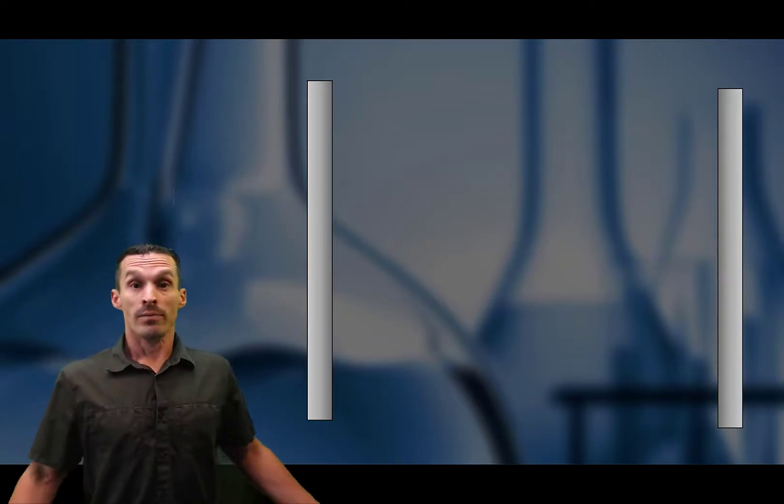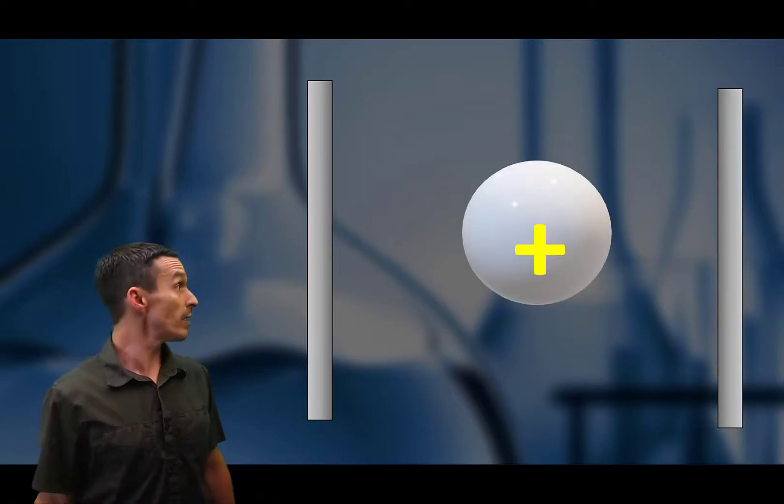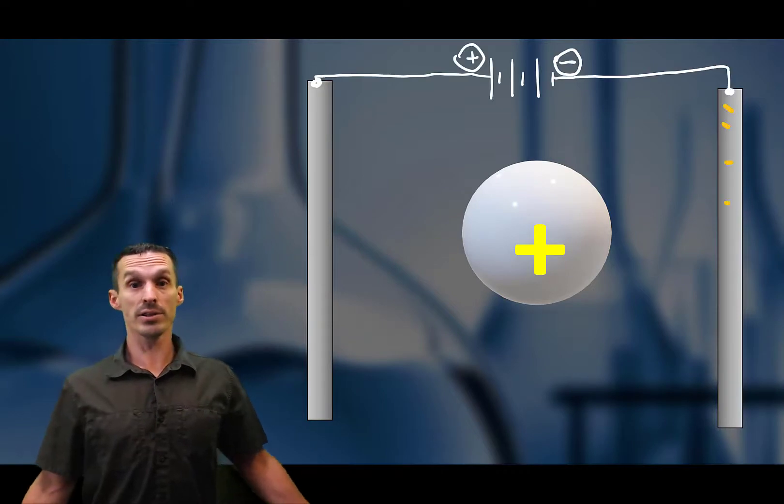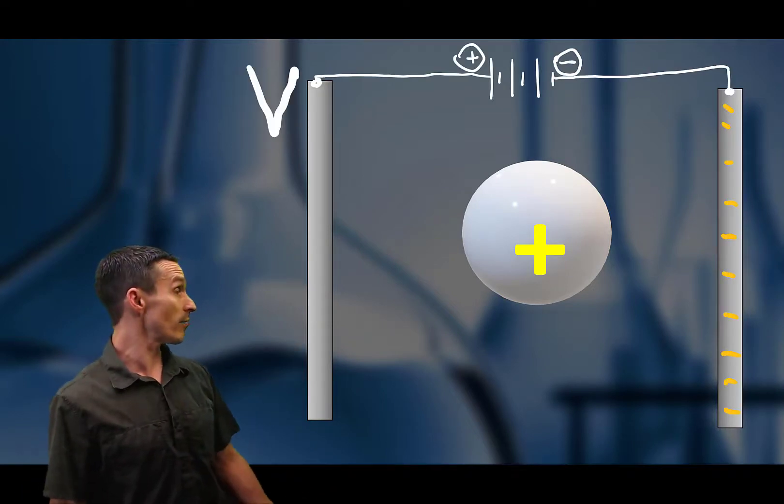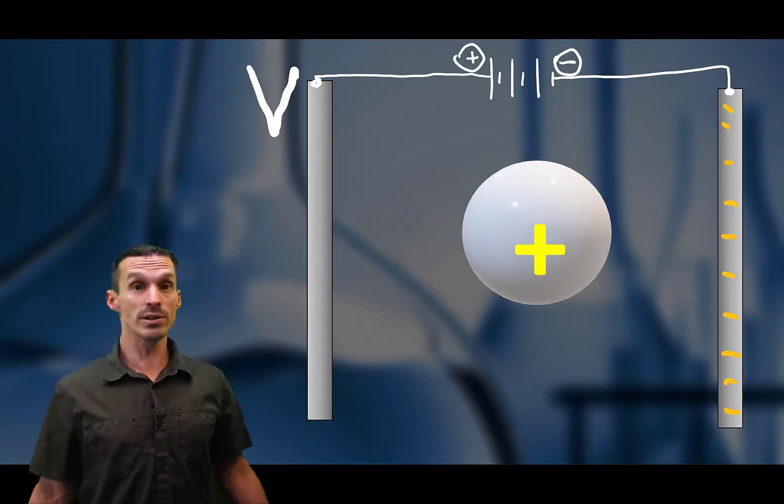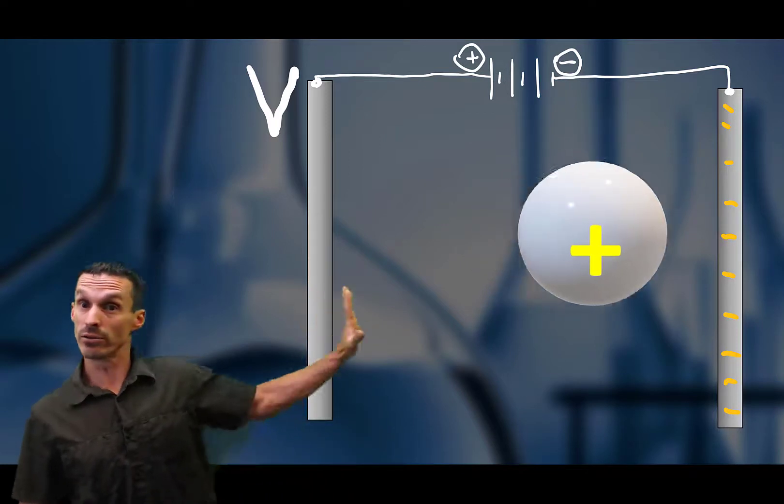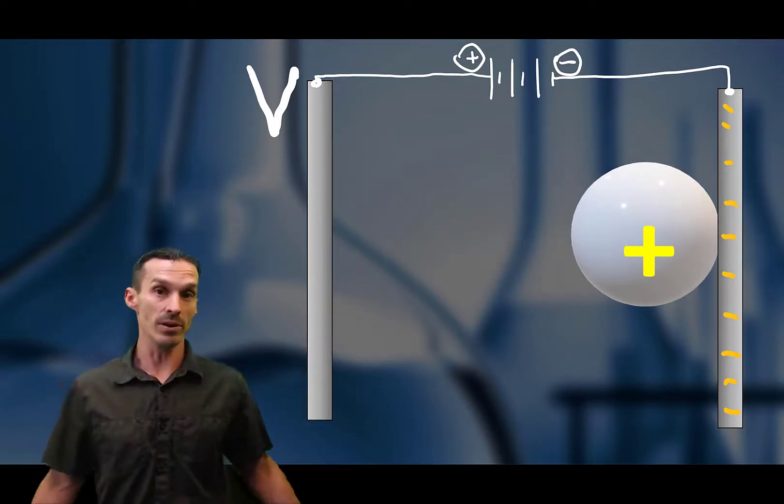So very simple, you have two plates here and an ion that's placed right in the middle of it. Now nothing's going to move until you place it in an electric field. But as soon as you do, it's just a matter of positive attracting to negative. Kind of obvious, right?